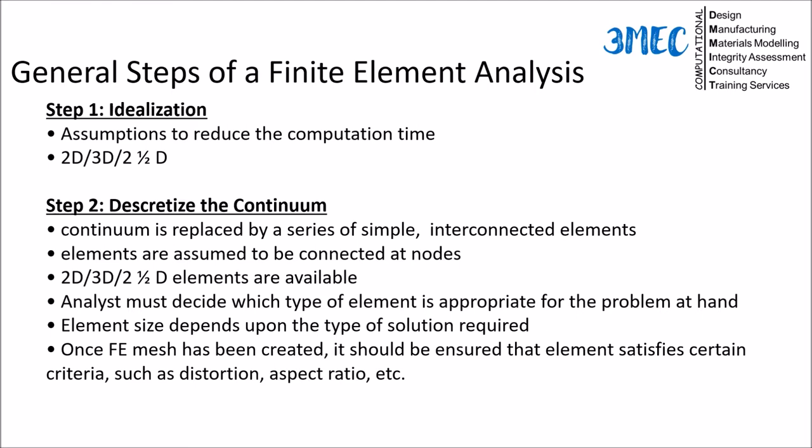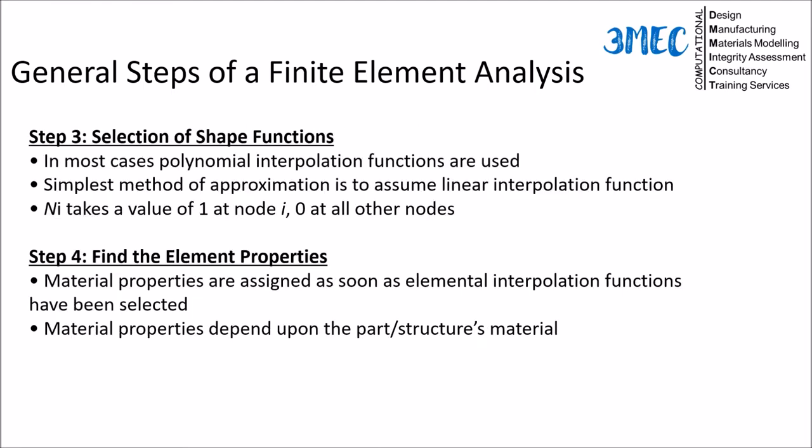Based on your assumptions you can have 2D elements, 3D elements, or 2.5D elements. The size of the elements will highly influence your results and computational time, so it's very important that you select a mesh which will give you a reasonable result and completes in a reasonable amount of time. Once you are done with the geometrical assumptions and discretization, you then have to select a shape function. I have a detailed lecture on that, so have a look at that if you are interested — it covers polynomial interpolation functions.